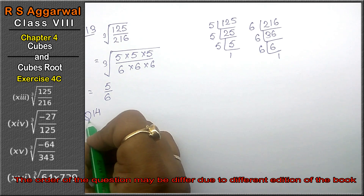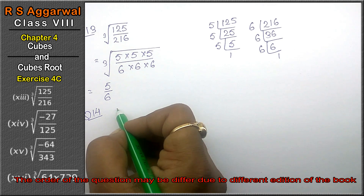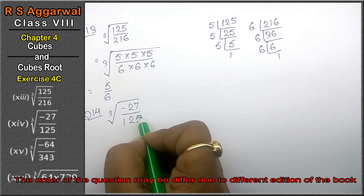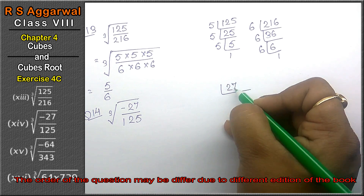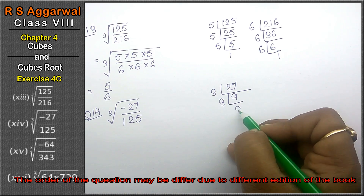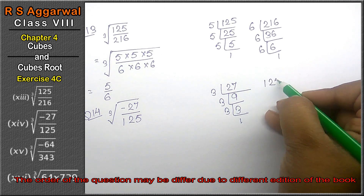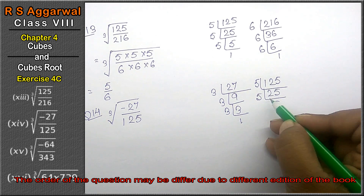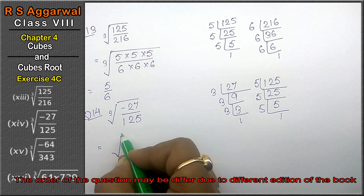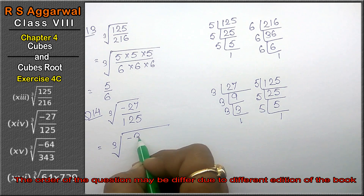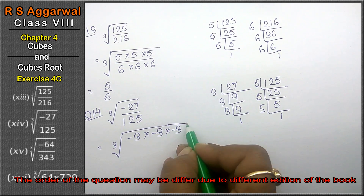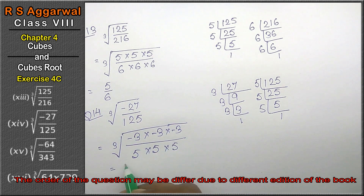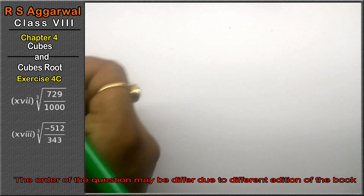Let's do question number 14 of Exercise 4C. Question number 14 is cube root of minus 27 upon 125. We know 27 = 3³ and 125 = 5³. Writing in cube root: (−3)×(−3)×(−3) upon 5×5×5. Making pairs of 3 and taking one out, the answer is minus 3 upon 5.